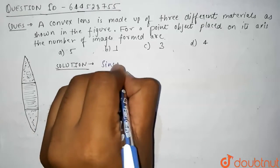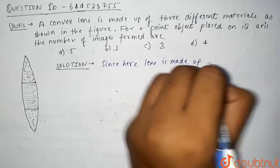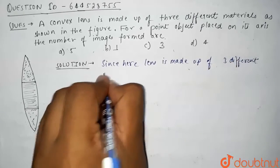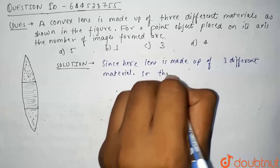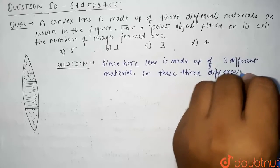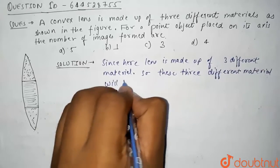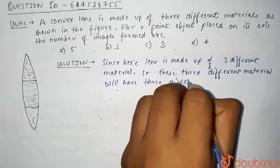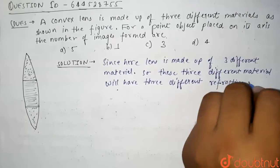Now see guys, since here the lens is made up of three different materials, so we can say that these three different materials will have three different refractive indices.